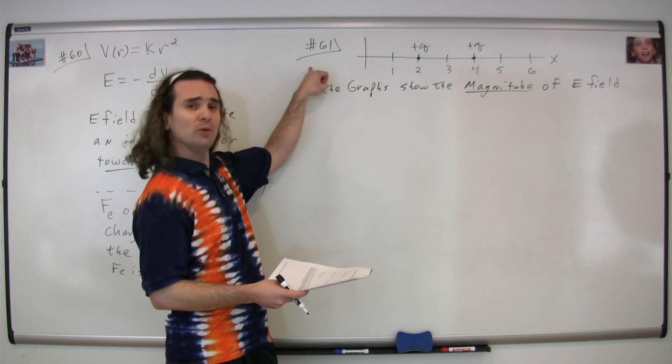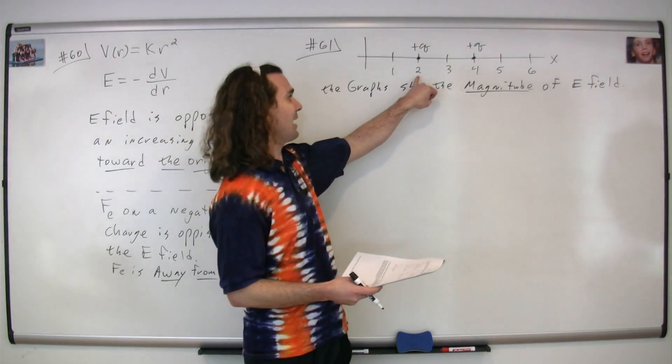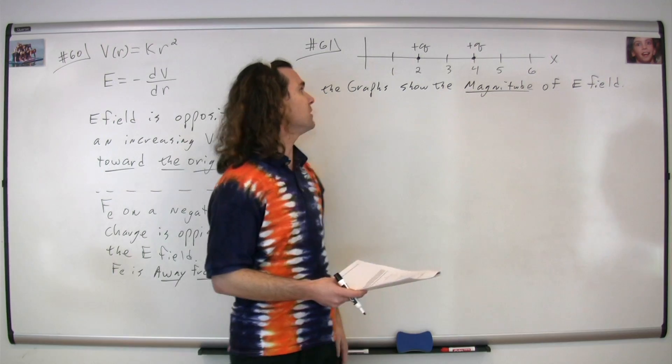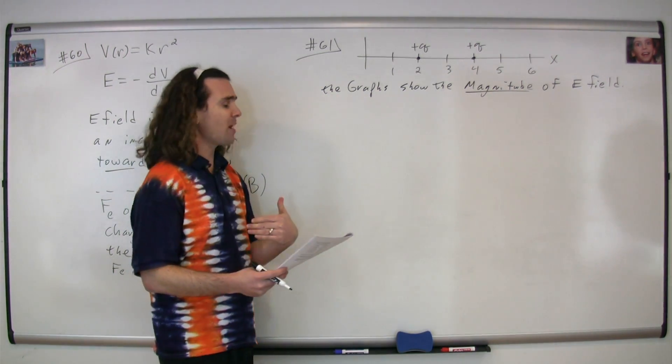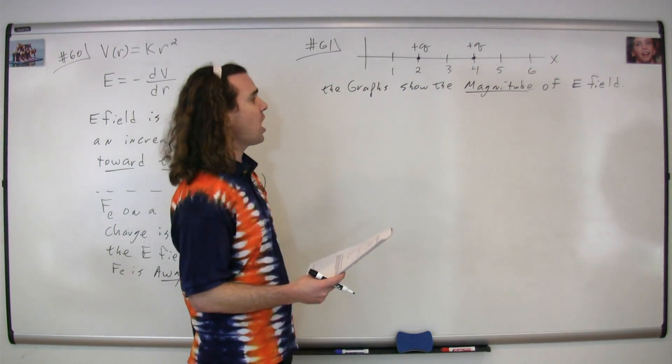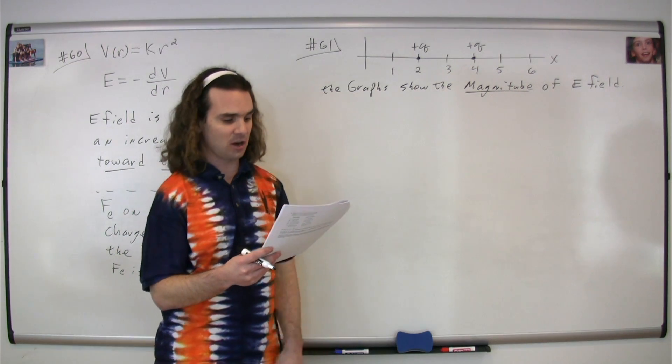Question number 61: we have two equally charged particles located at points two and four meters, and we're trying to figure out which graph shows the magnitude of the electric field correctly. We have five choices to talk about.